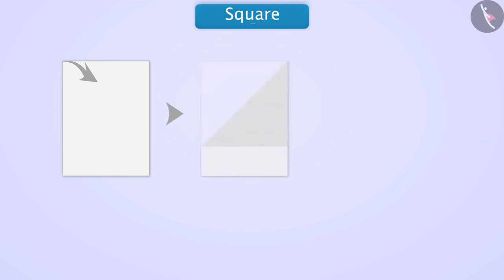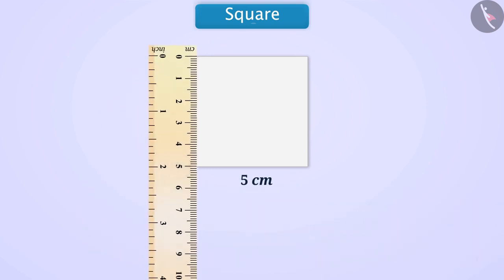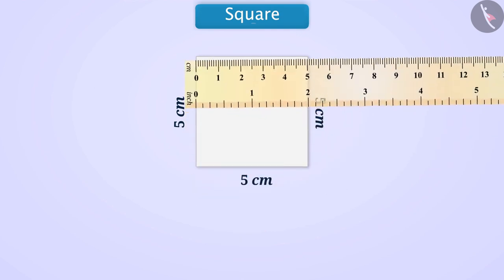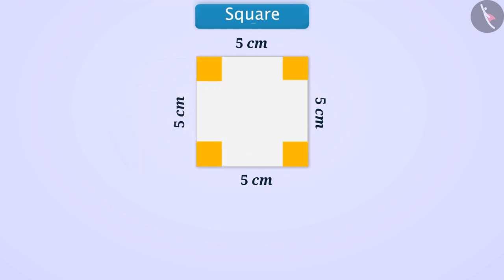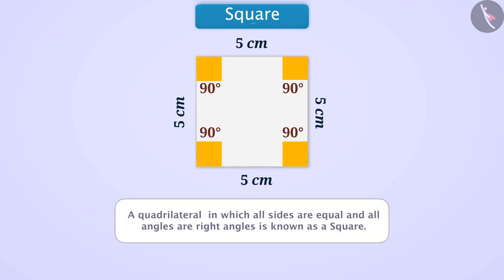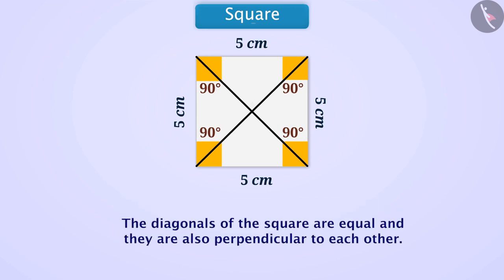Now let's talk about the square. Consider that we take a rectangular piece of paper. Place one of its corners on the opposite side such that the shortest side falls just above the longest side and a right-angled triangle is formed. Now cut the rectangular part outside the right-angled triangle, then open that part. You will get a quadrilateral which is a bit different from a rectangle. If you measure the length of all its sides, the length of all sides is equal. With the help of a protractor, if we measure each angle, then each will be 90 degrees, meaning a right angle. Such a quadrilateral, in which all sides are equal and all angles are right angles, is known as a square. If we measure its diagonals, they are equal and perpendicular to each other, meaning they intersect at 90 degrees.